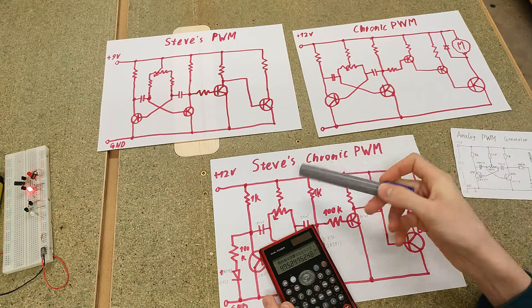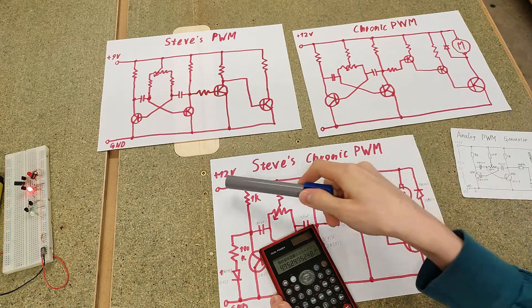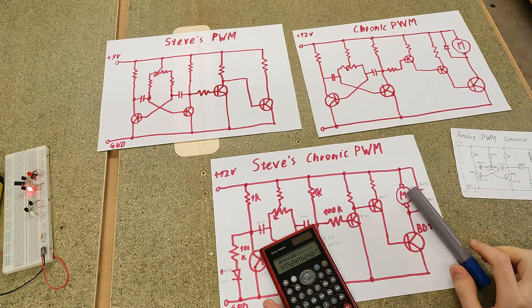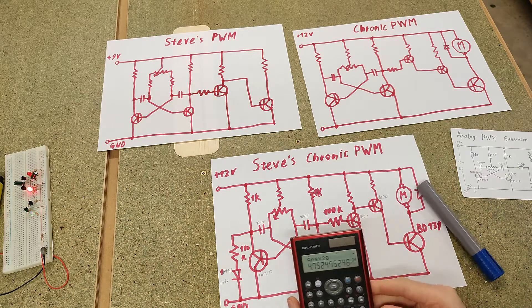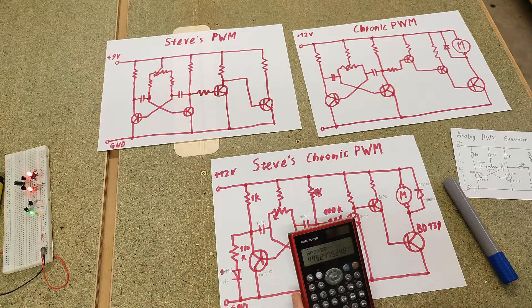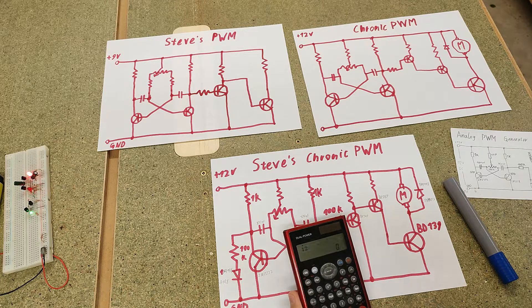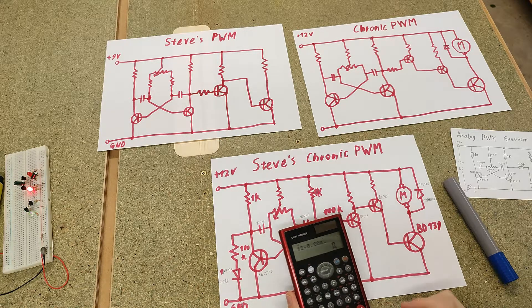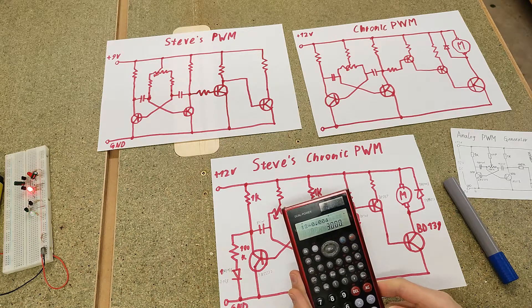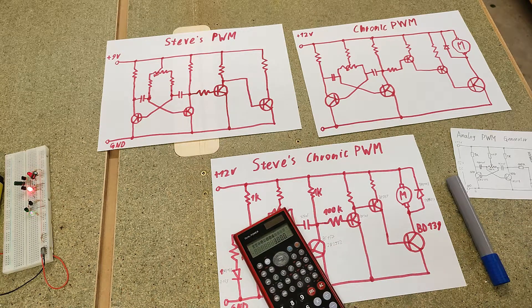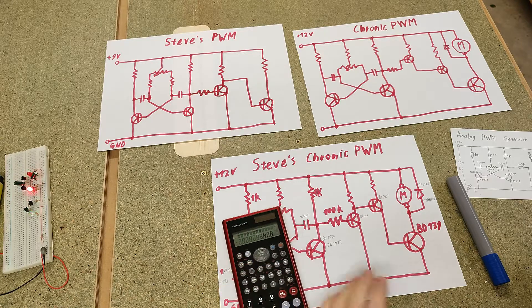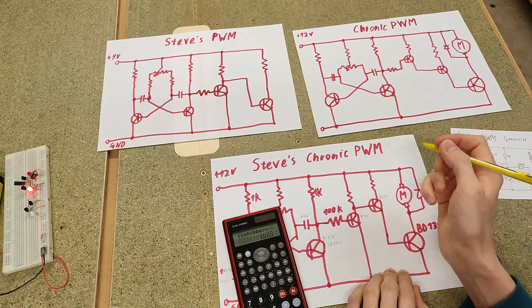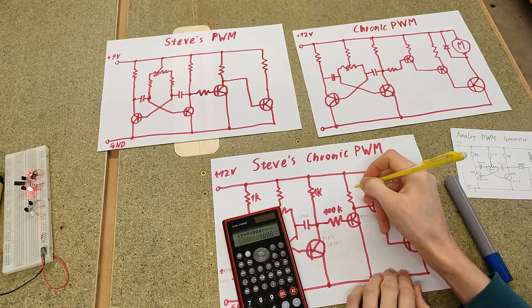So we can simply calculate this resistor for a current of 4.7mA. Let's go with 4mA. So we have 12V divided by 0.004A is 3K. The closest standard value I believe is 3.3K.